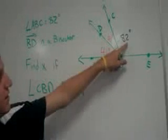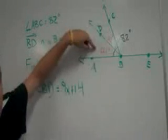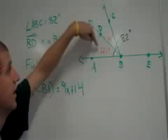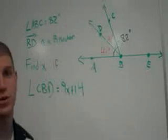So, if the whole thing is 82, we really know that each one of these has an angle measure of 41 degrees.